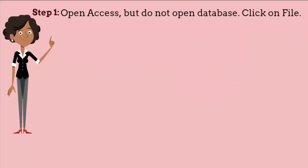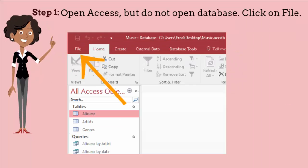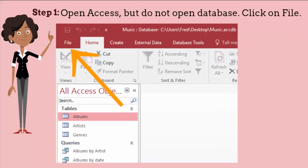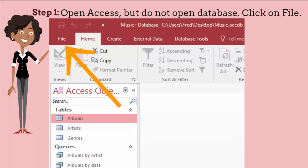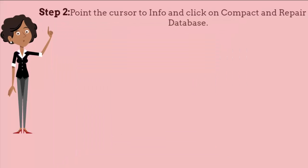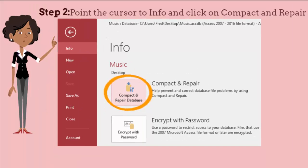Step 1: open Access, but do not open a database. Click on File. Step 2: point the cursor to Info and click on Compact and Repair Database.